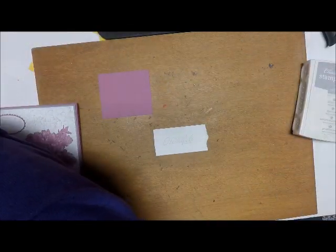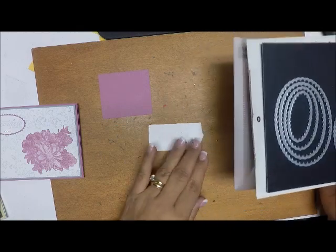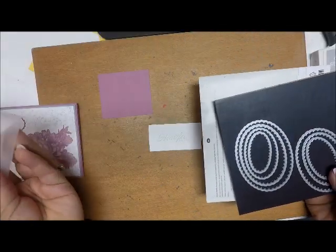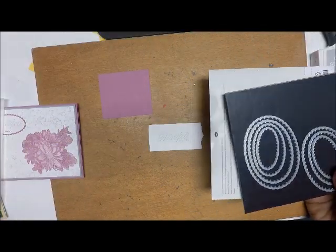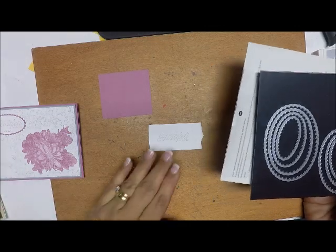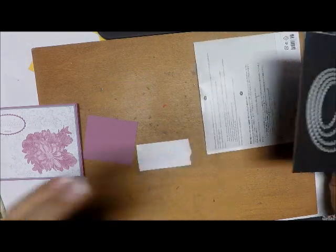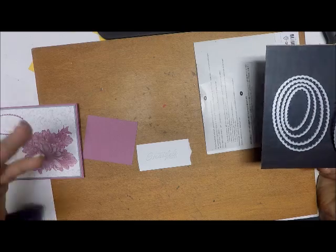Now I'm going to die cut that out, and I'm going to use one of my go-to die cut stamp sets, which is the layering ovals. I use the layering ovals, layering squares, and layering circles a lot, because it's a great way to be able to add a nice element to your card.